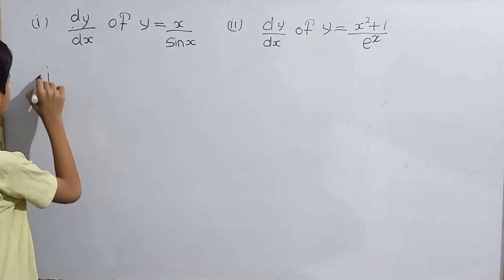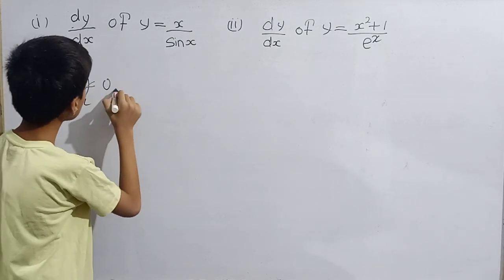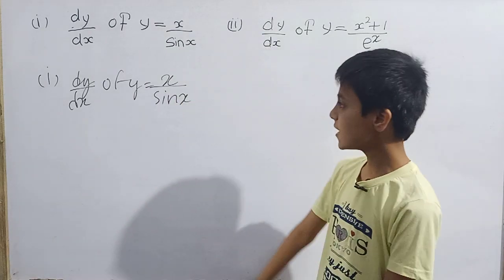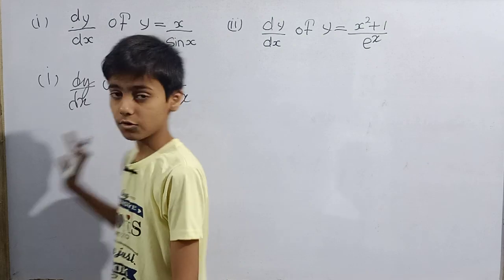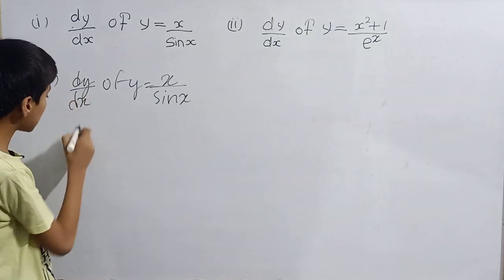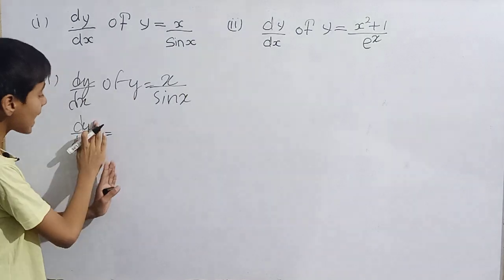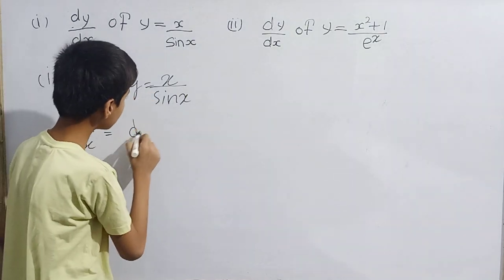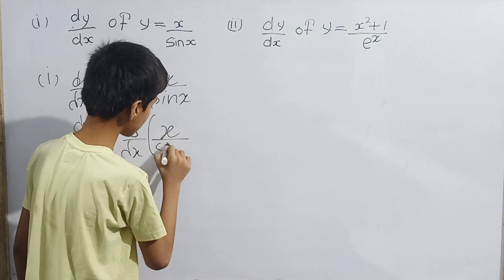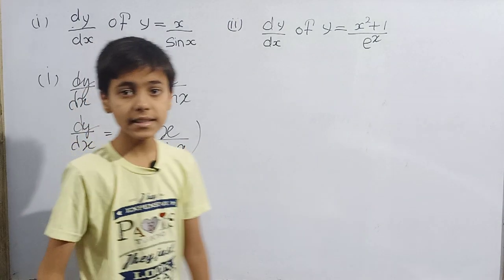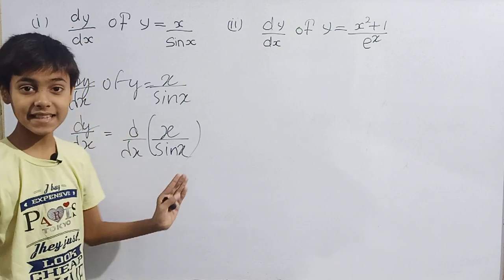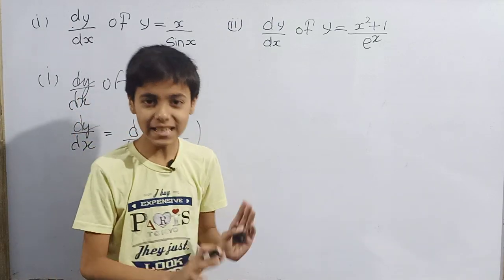Starting with the first: we have to evaluate dy/dx of y = x/sin(x). So if I have to find the answer, I know the value of y — I just have to differentiate it with respect to x. My dy/dx will be d/dx of x/sin(x). This is in the form of u/v, so we can use the u/v method — the quotient rule.